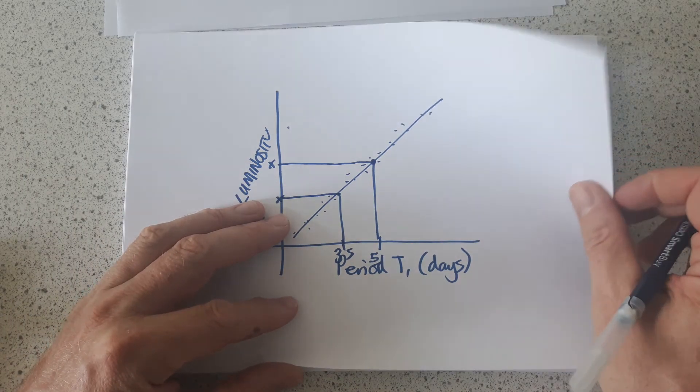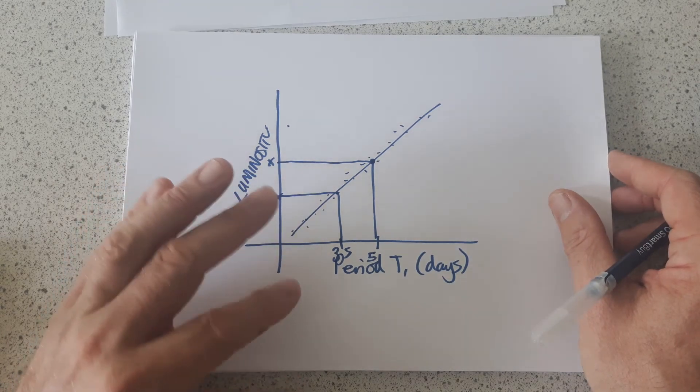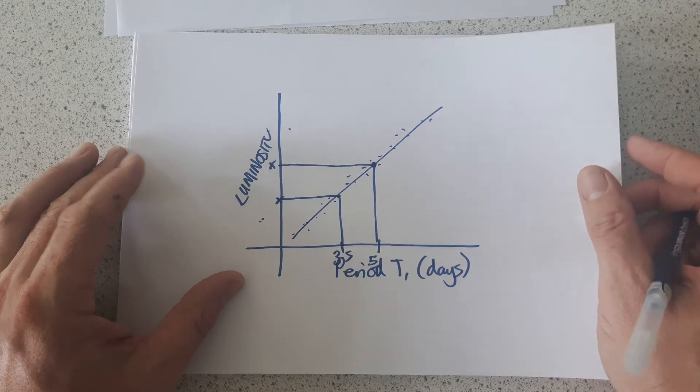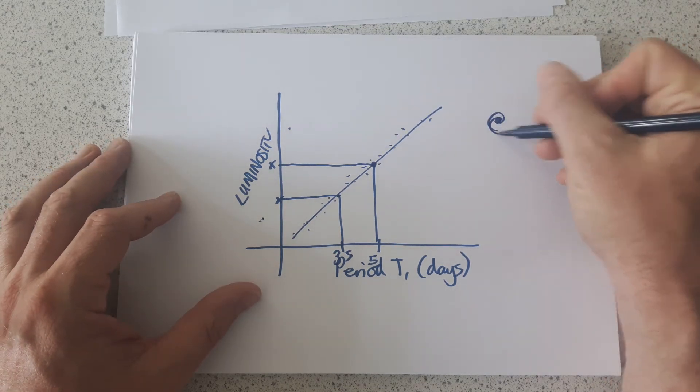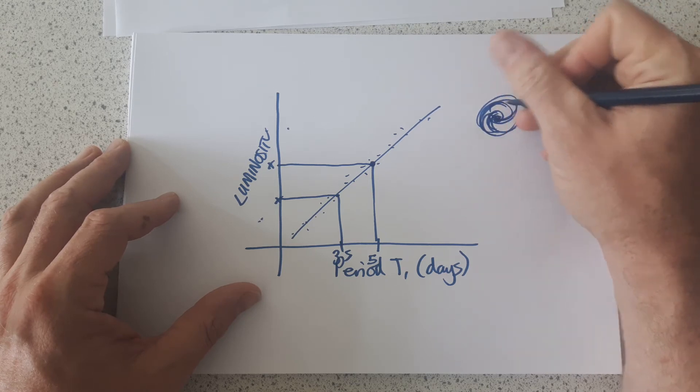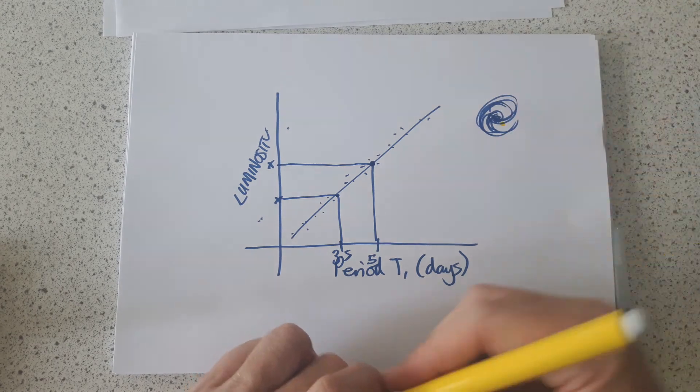So what Henrietta Leavitt started to do was to then catalogue the distance to all the different galaxies that she could in the universe. She would find a galaxy, so a galaxy, remember, is a collection of stars orbiting around a central point. She would find within that galaxy a Cepheid variable star.